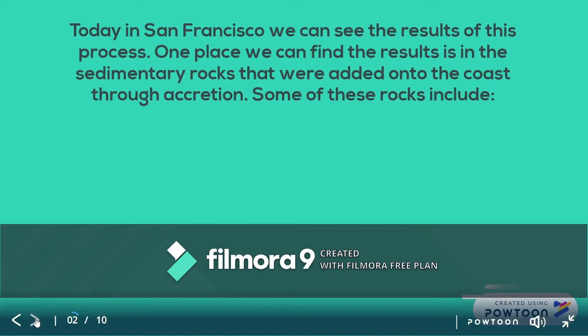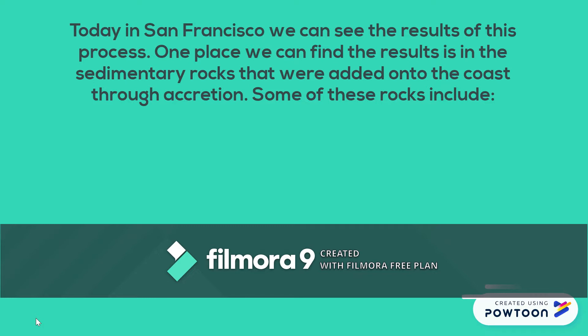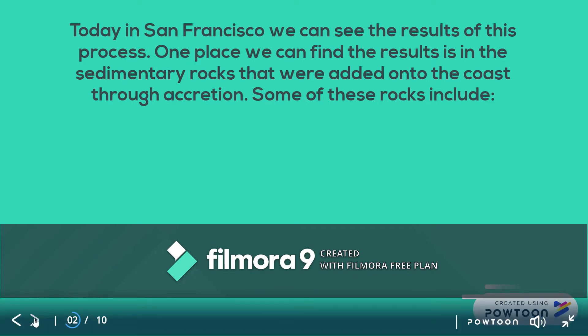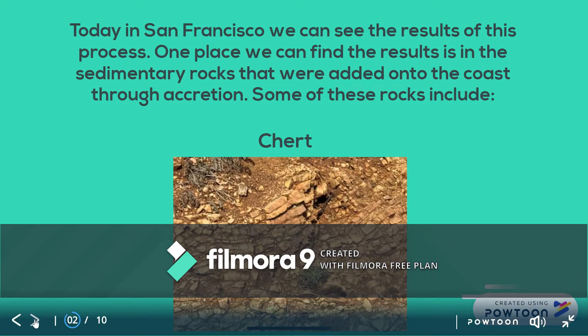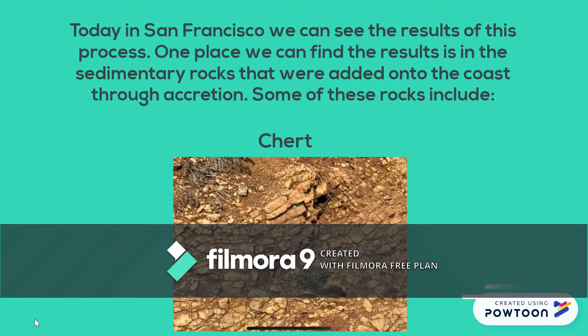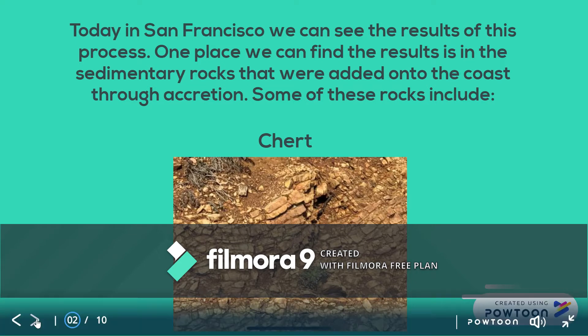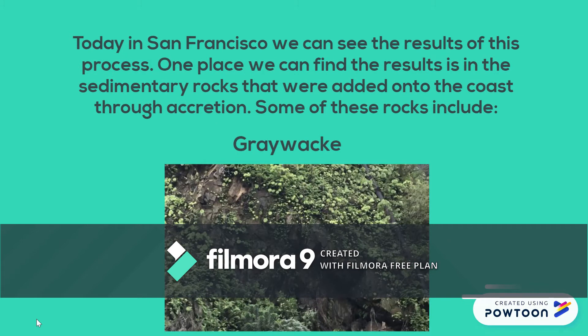Currently in San Francisco and the Greater Bay Area, you can find many rocks created from the processes we have just described. Some sedimentary rocks scraped off the oceanic plate through accretion include chert, a reddish-brown rock with many easily visible layers, often found with clay in between its layers. Greywacke is a dark gray, sandy-textured rock with visible layers that is abundant in the Bay Area.